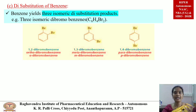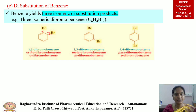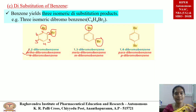Our next reaction is disubstitution of benzene. Benzene yields three isomeric disubstitution products — for example, three isomeric dibromobenzenes. The first is 1,2-dibromobenzene, where bromines are at adjacent positions, called orthodibromobenzene. When substitutions are separated by one carbon atom, it is metadibromobenzene. When substitutions are in opposite directions, it is paradibromobenzene.